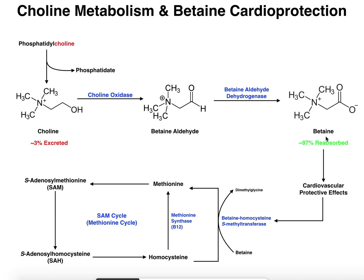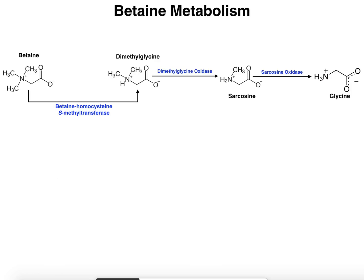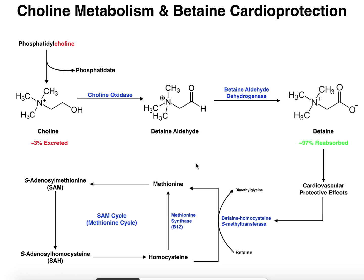Betaine is actually marketed as betaine hydrochloride as a supplement and can be found in some drugstores, because it's quite valuable to the body. If you consume it or if it's produced from choline metabolism, 97% of it is reabsorbed. We're going to talk about two things that happen with betaine: one is its cardiovascular protective effects, and the other is its mode of degradation, which ultimately leads to the amino acid glycine.